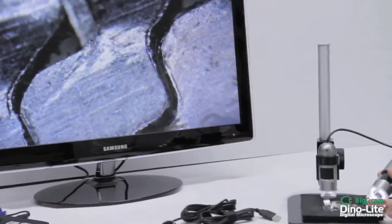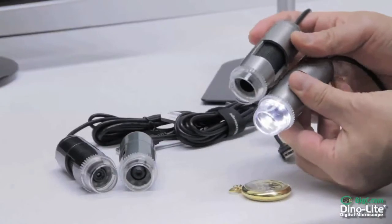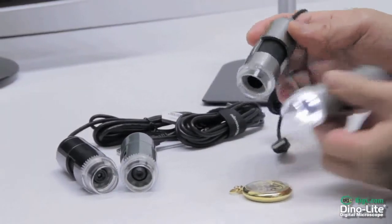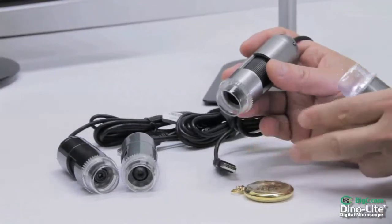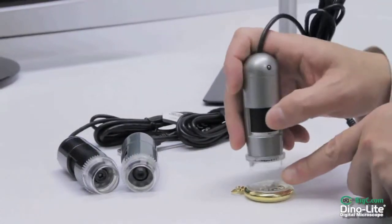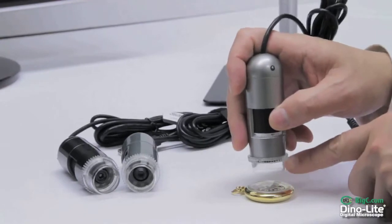However, when touching the object, one can achieve 90 to 120 times the magnification. But when you back out to about 6 millimeters away, 220 times the magnification is capable.